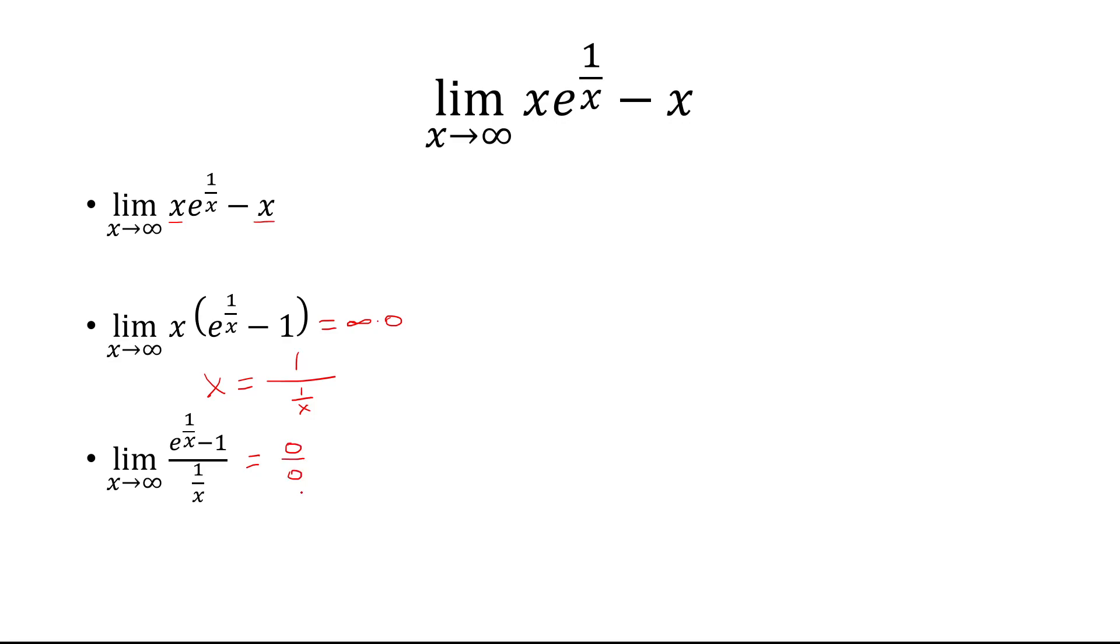Now we can use L'Hopital's rule. So we take the derivative of the top and the derivative of the bottom. The derivative of the top is e to 1 over x multiplied by the derivative of 1 over x, which is negative 1 over x squared. In the denominator, we also have negative 1 over x squared. So those are going to cancel.